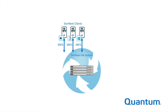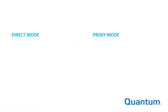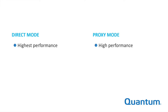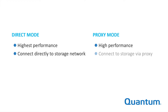Systems using StorNext client software may connect in one of two ways: direct mode or proxy mode, also known as DLC. Each offers unique benefits. Direct mode provides the best performance. Proxy mode is less expensive and still faster than NAS.